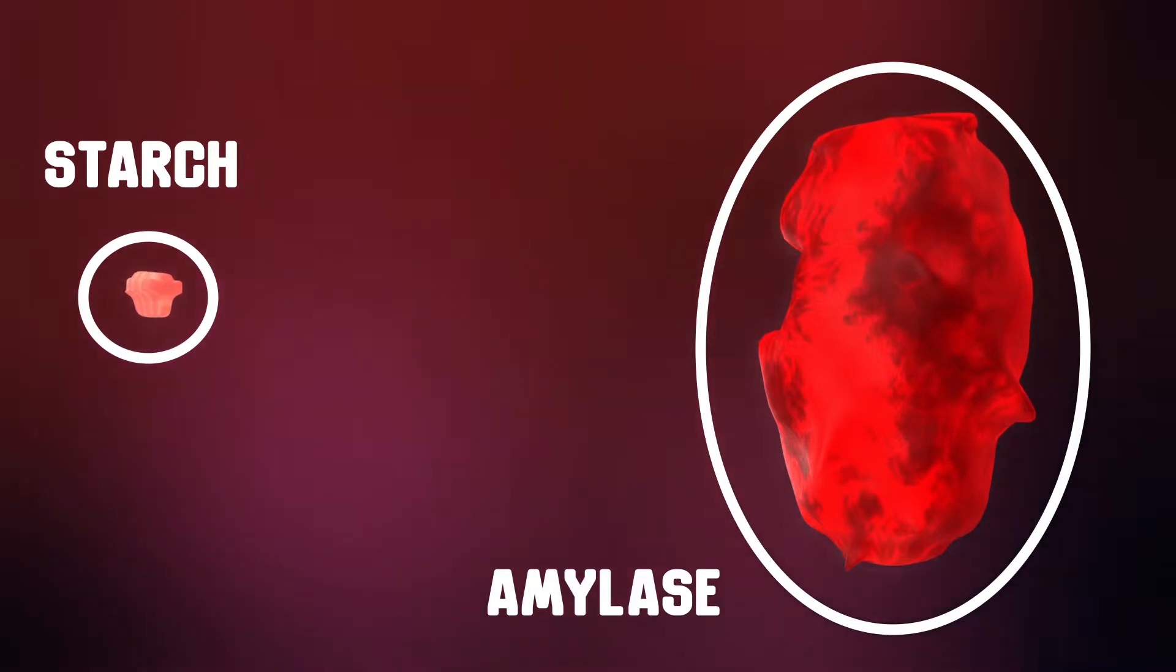Here we can see the digestion of starch, which is the substrate the enzyme, known as amylase, works upon. An enzyme has a specific shape called an active site, and this is where the substrate binds to. Induced fit now occurs.